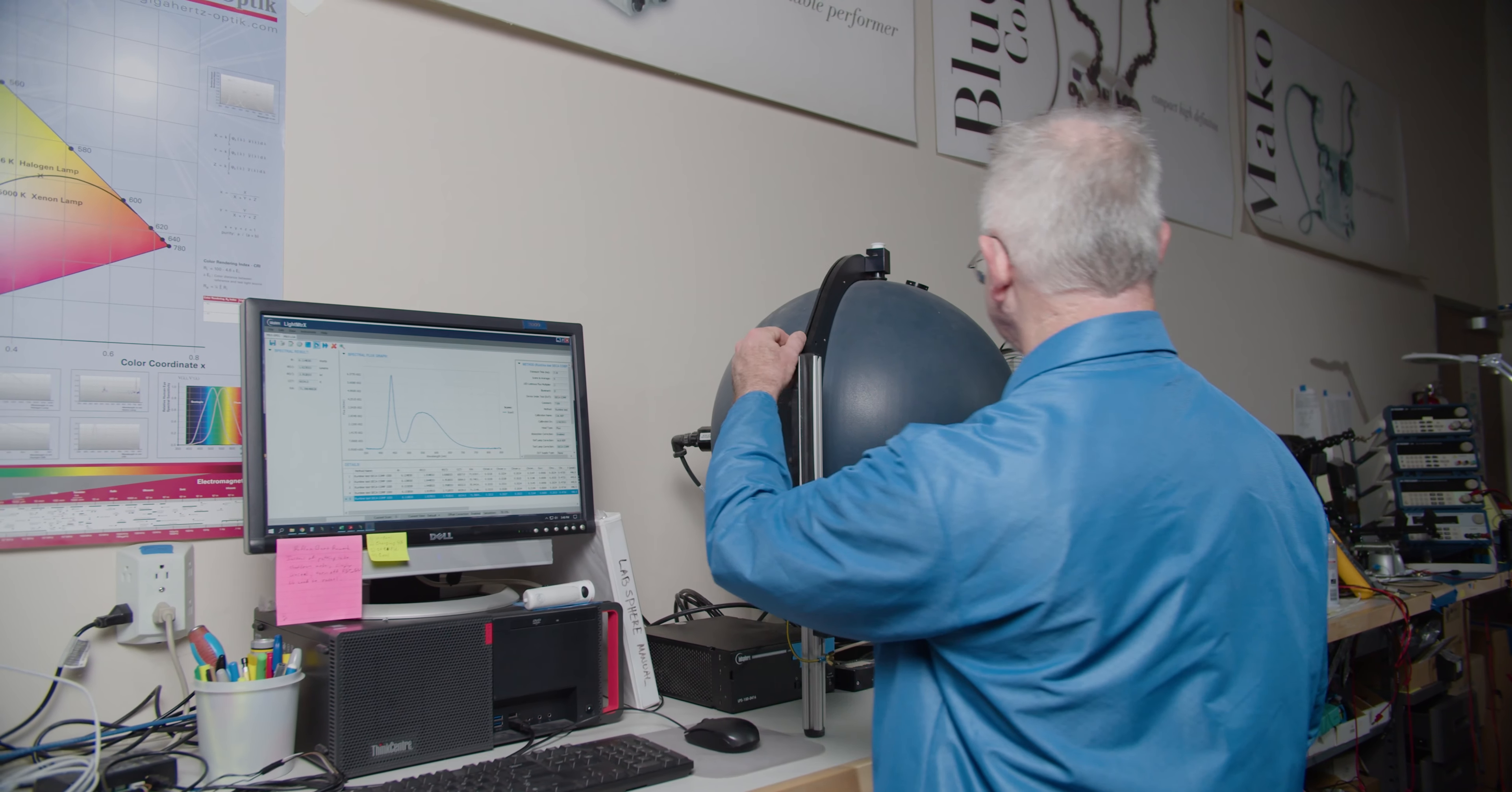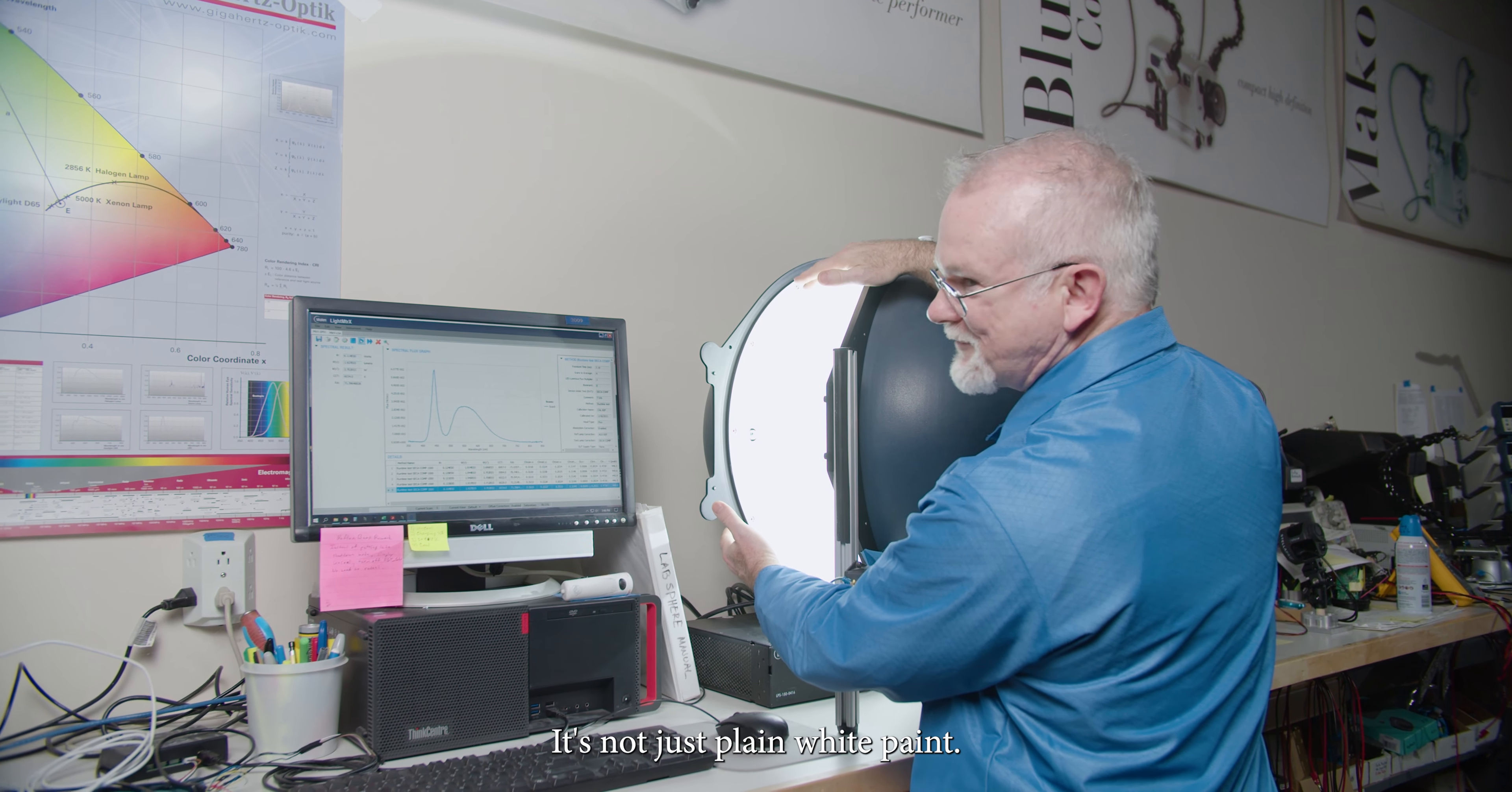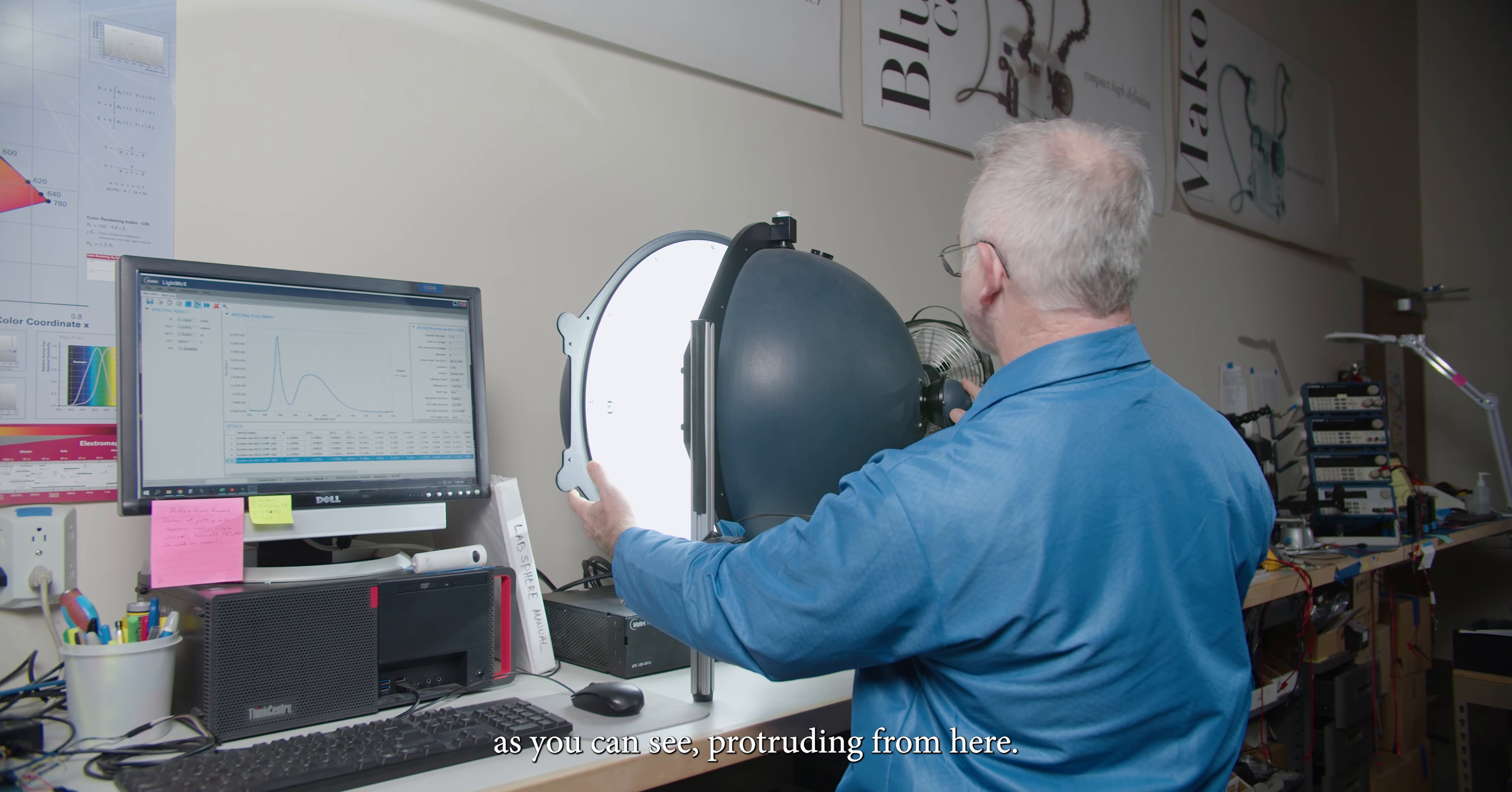Let's take a peek inside. So all of the light bounces around inside this sphere. It has a specially reflective coating. It's not just plain white paint. And then there's a calibration lamp that you see in the back there. And there's a sensor on this other side that you can see protruding from here.